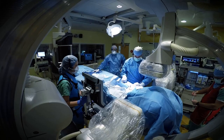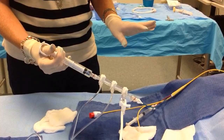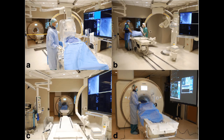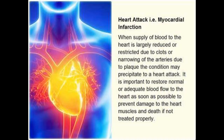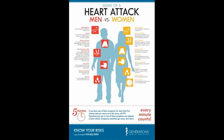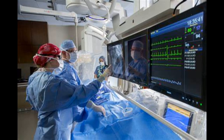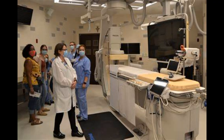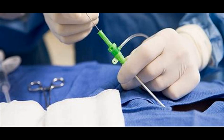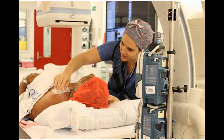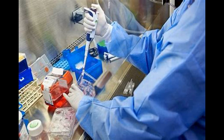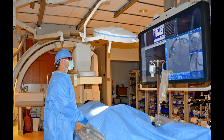The auricle is named because of its resemblance to a dog's ear. Each auricle slightly increases the capacity of an atrium so that it can hold a greater volume of blood. On the surface of the heart are a series of grooves called sulci, which contain coronary blood vessels and fat. Each sulcus marks the external boundary between two chambers. The deep coronary sulcus encircles most of the heart, marking the boundary between the atria and ventricles. The anterior and posterior interventricular sulci mark the boundary between the right and left ventricles.